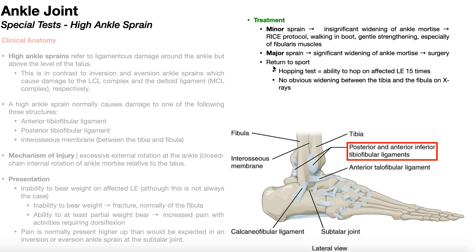If the person is going to return to sport, several criteria must be met. One is passing the hopping test — a validated test requiring the person to hop 15 times on the affected lower extremity. If they cannot complete 15 hops, they do not pass and do not return to sport. Additionally, there must be no obvious widening between the tibia and fibula on x-rays, which is especially important following a major sprain requiring surgery.